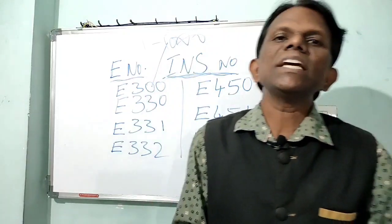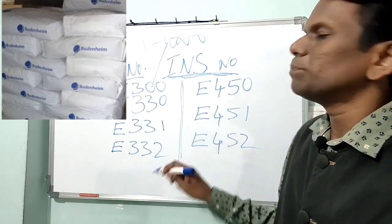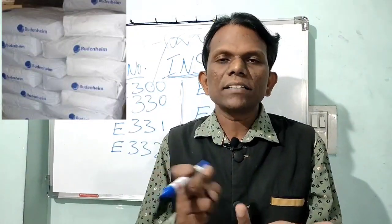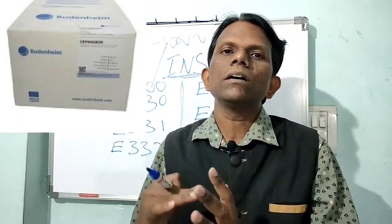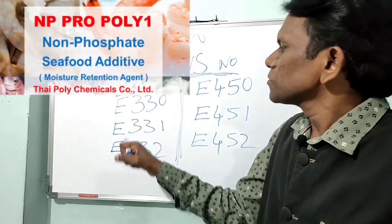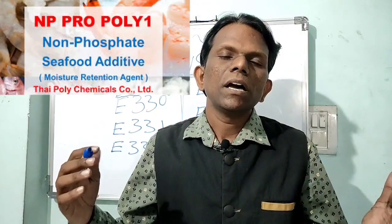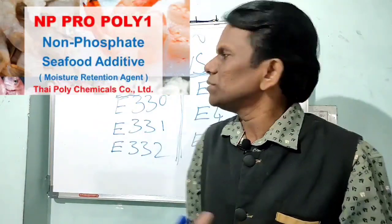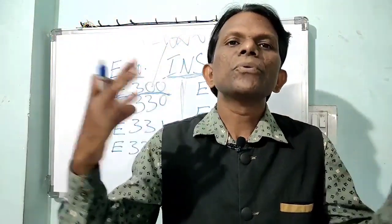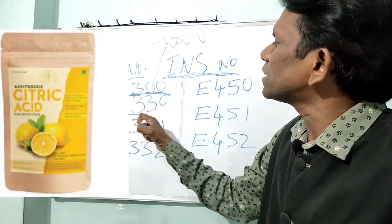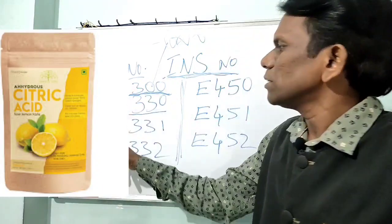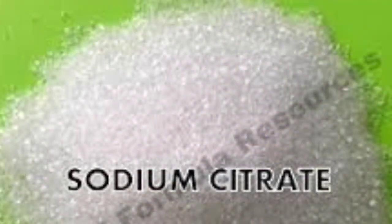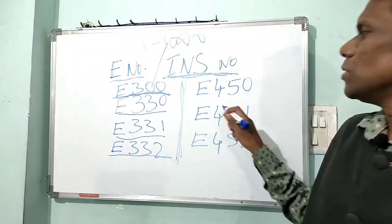In shrimp and seafood processing there are two categories: phosphate treatment and non-phosphate treatment. The non-phosphate, phosphate-free additives include E300 (ascorbic acid, i.e., Vitamin C), used as an antioxidant; E330 (citric acid), which acts as a moisture retaining agent and antioxidant; and E331 (sodium citrate) and potassium citrate. These are all non-phosphate additives extensively used in shrimp processing.